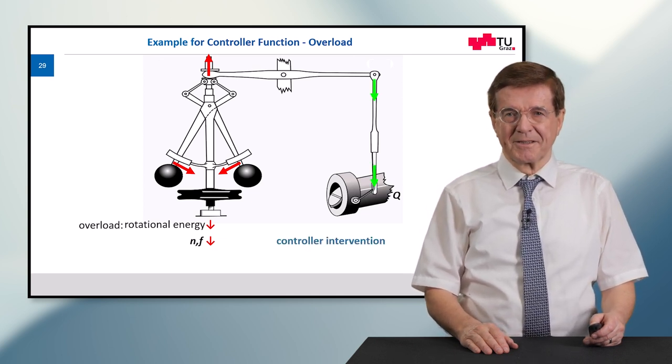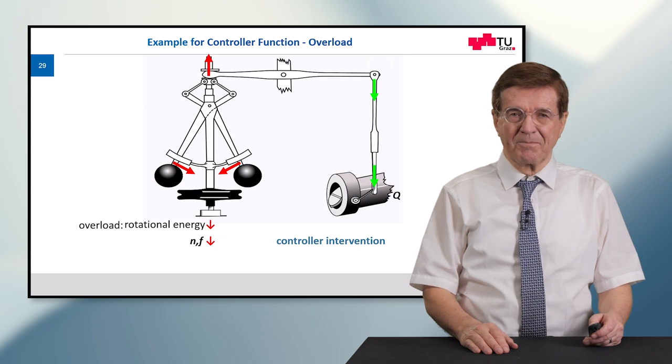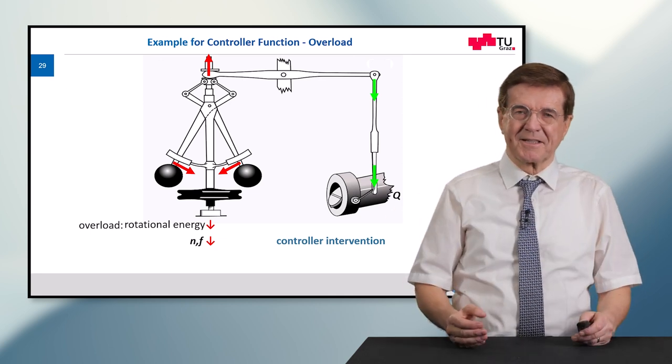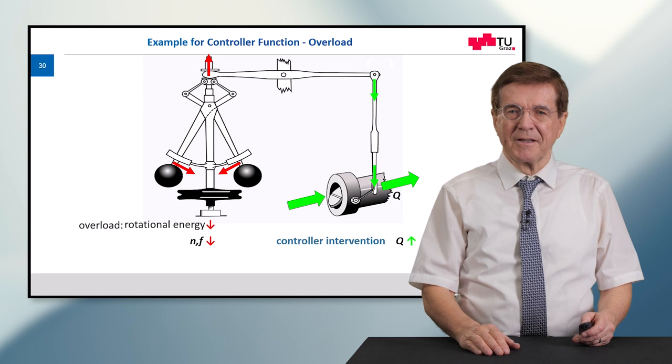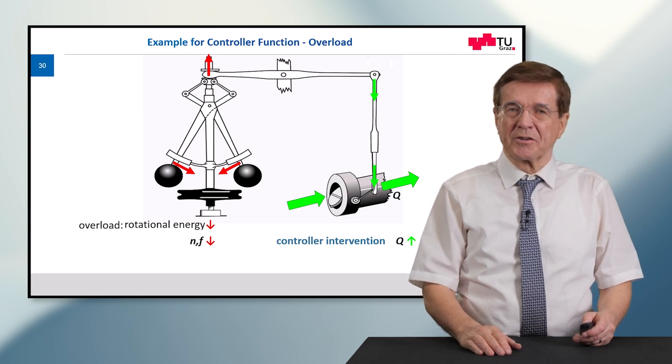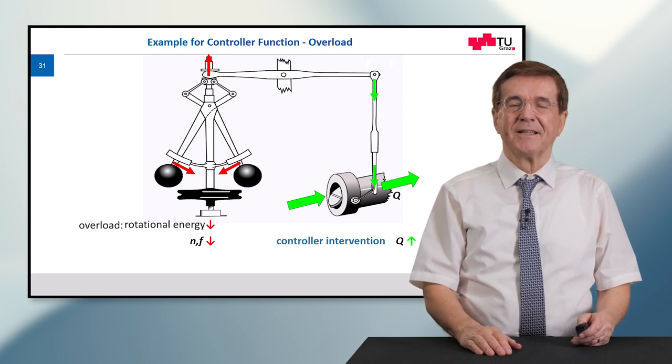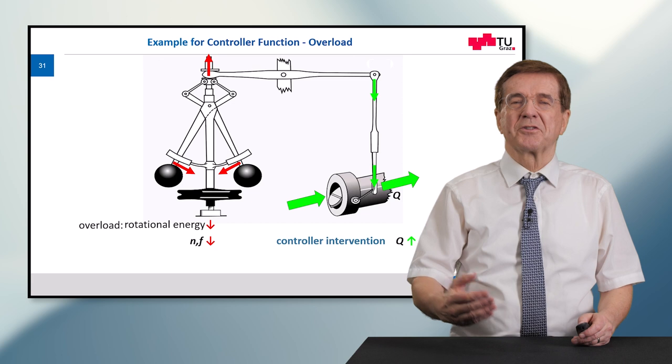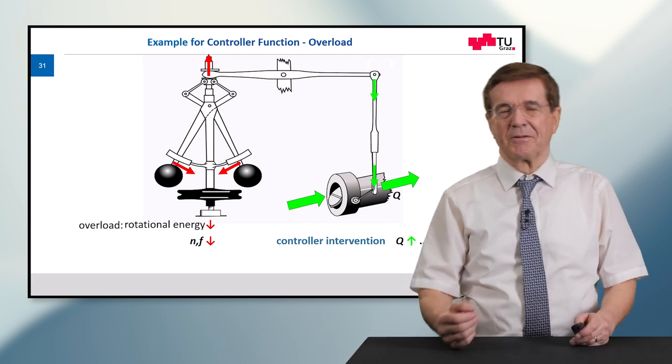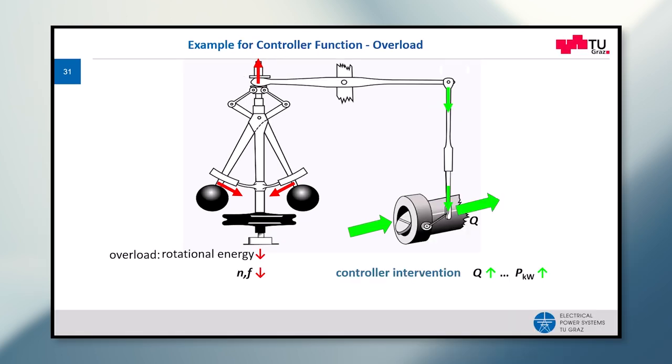Now the controller comes into effect. The controller by means of this lever mechanism you can see opens the valve. We get more flow of water or another medium into the turbine, and while the flow of water is increased, the power that is produced or converted from mechanical power into electrical power in the generator is also increased.